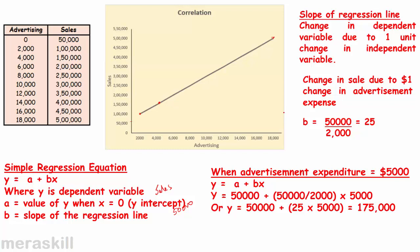When the advertisement expenditure is $5,000, using y = a + bx: a is $50,000, b is 25, and x is $5,000. If I want to find out the expected sales, I compute: 50,000 + 25 × 5,000 = $175,000. This is how we use the equation. Instead of reading from the graph, we can use the formula and get the same result: expected sales of $175,000.